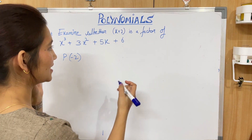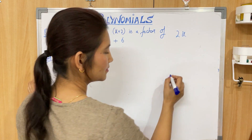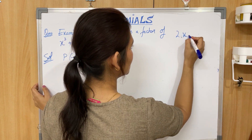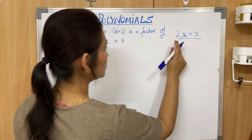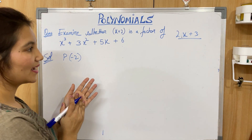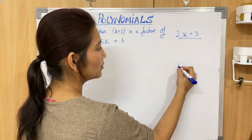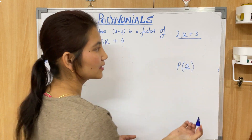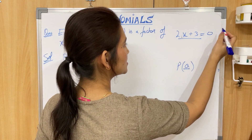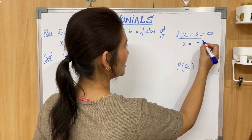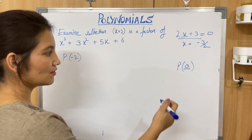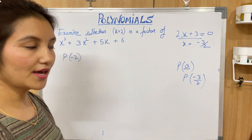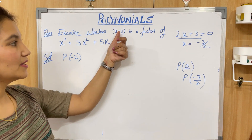As a general rule: if the factor is of the form (ax + b), equate it to 0 to find the value of x. For example, if it were (2x + 3), you'd equate to 0 and get x = −3/2, then find p(−3/2). Here, since our factor is (x + 2), we find p(−2).